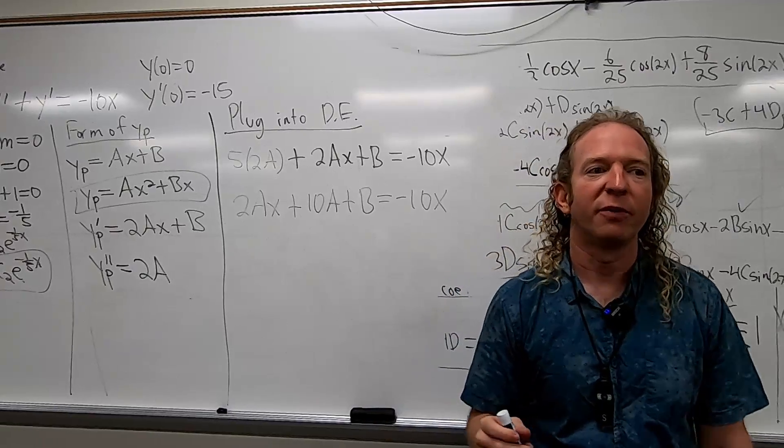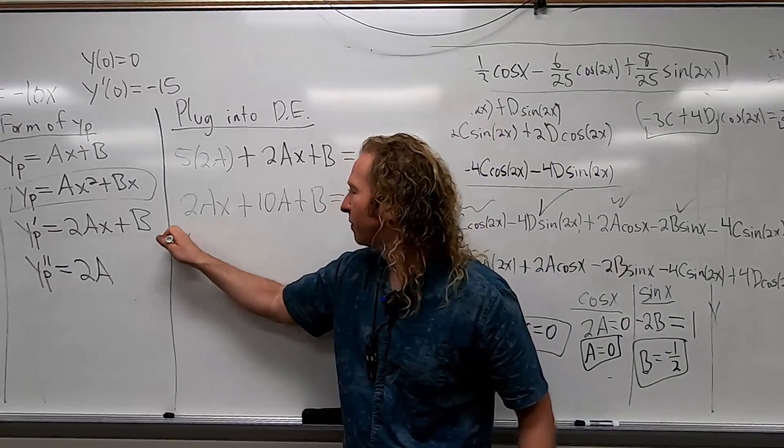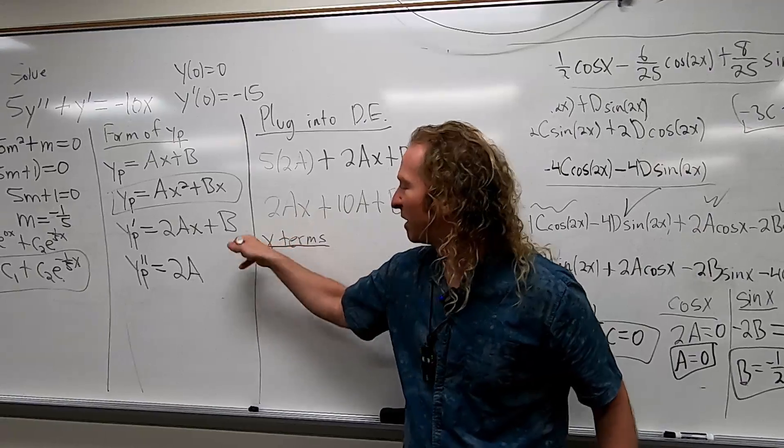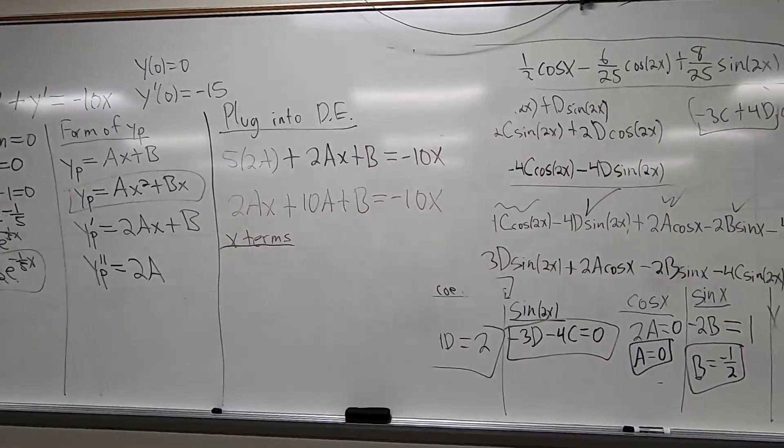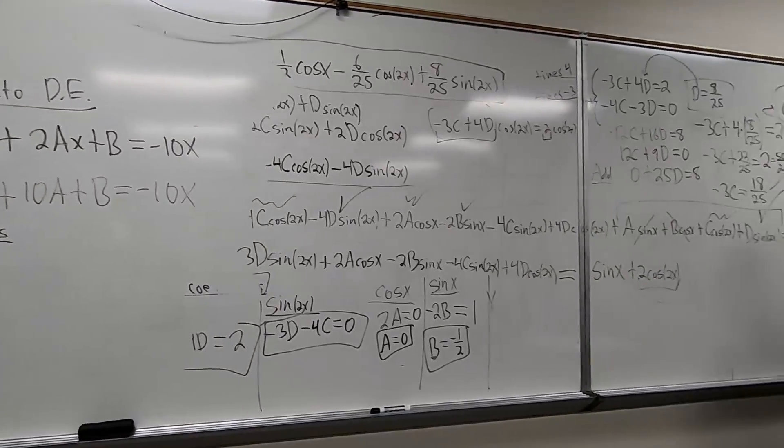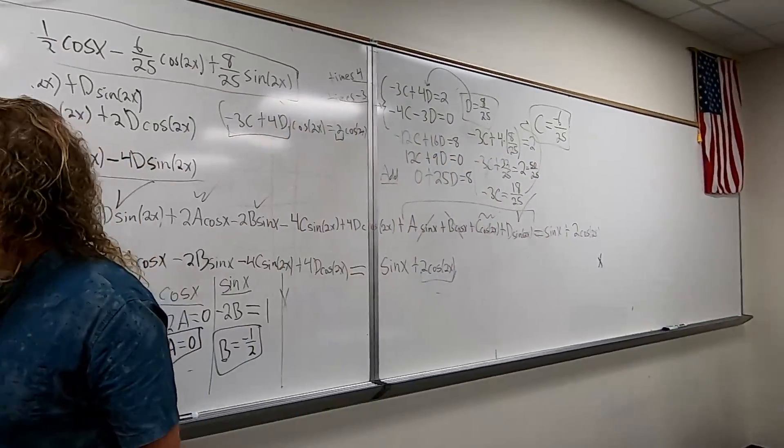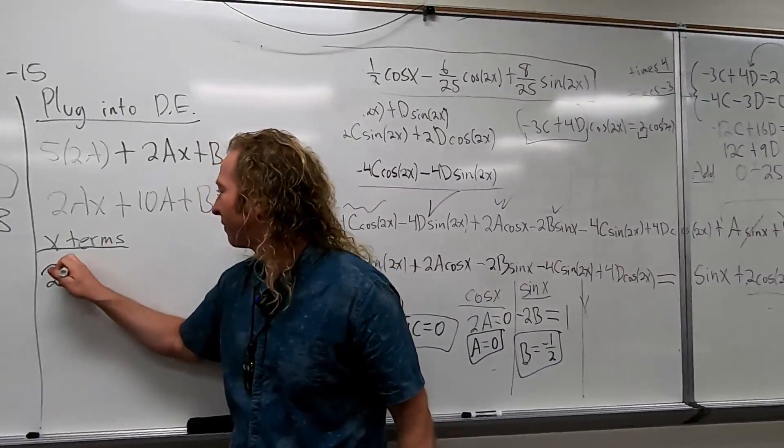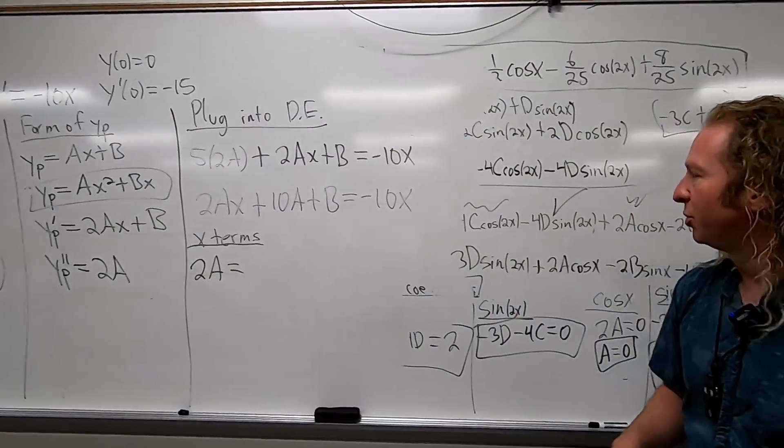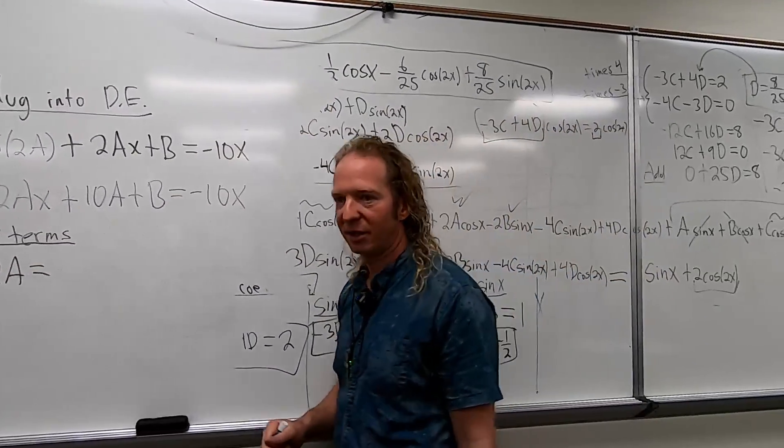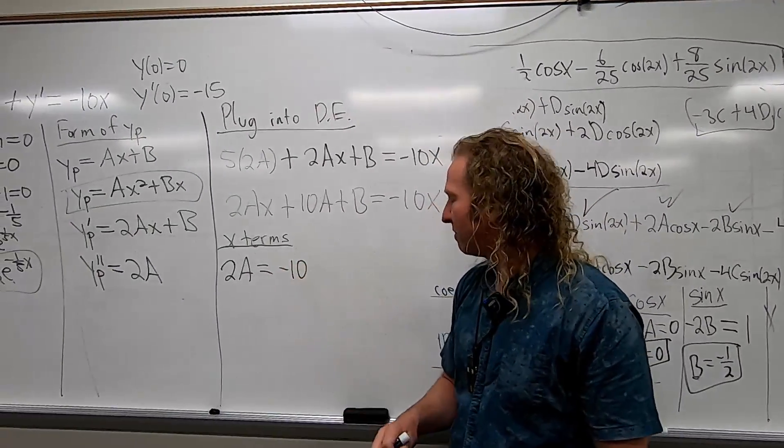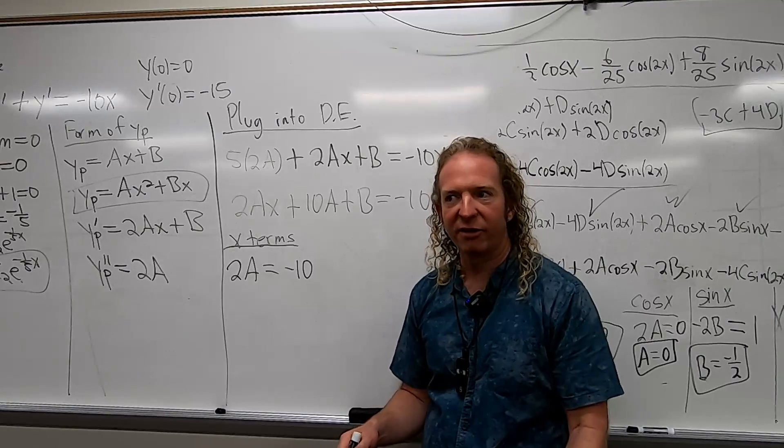This is 10A. I'm going to write it like this. 2AX plus 10A plus B. I just rewrote it in a nicer way. In my opinion, I think it's a nicer way. So 5 times 2A is 10A. And then 2AX, 2AX. And let's put the B here. And that's there. So now we're going to equate coefficients just like before. So we're going to look at the X terms. So 2A would be equal to what in this case? Negative 10. Yeah, using that method of equating coefficients. Very good. So that means that A is negative 5. I'm going to put that in a box.